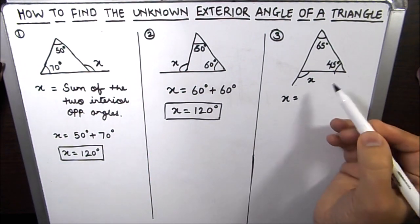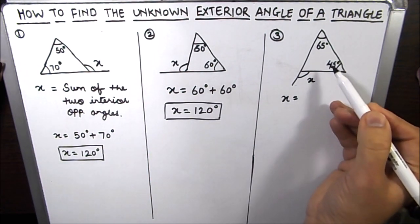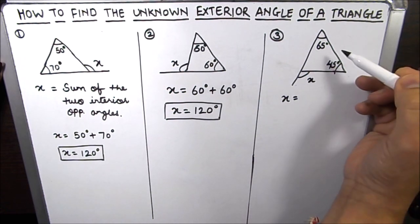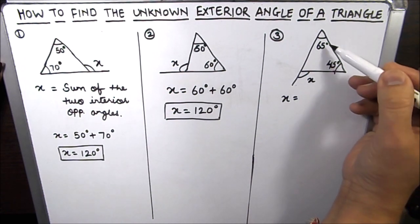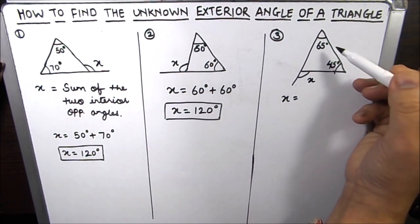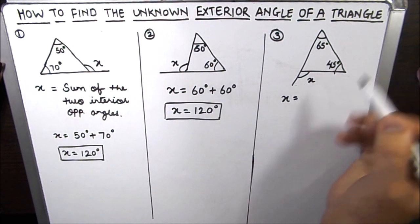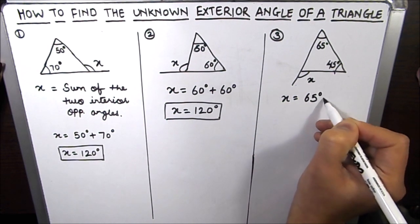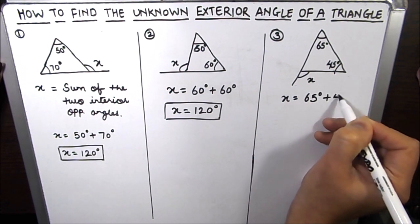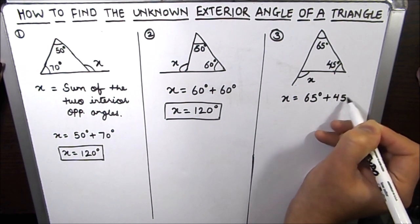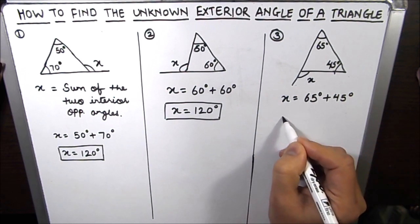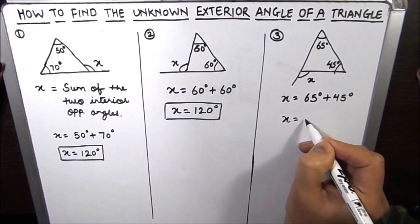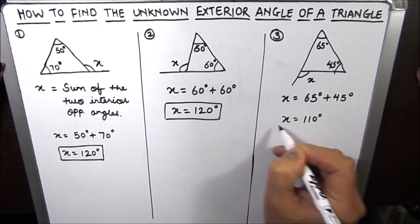The next one: the exterior angle x is equal to the sum of the two opposite interior angles, which are 65 degrees and 45 degrees. So x is equal to 110 degrees.